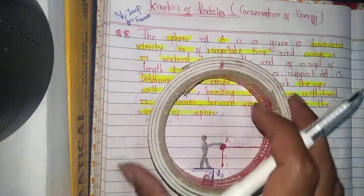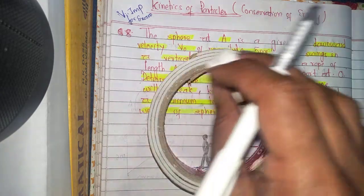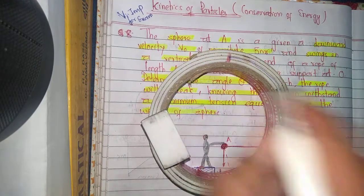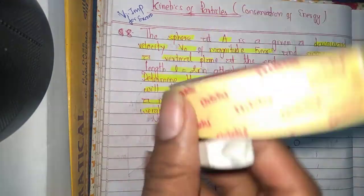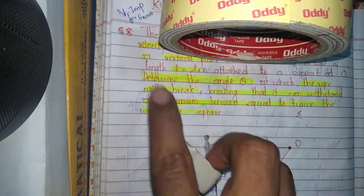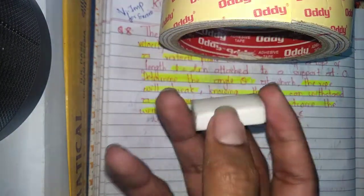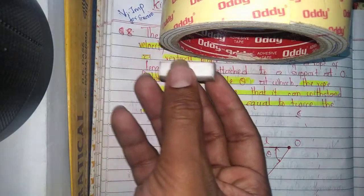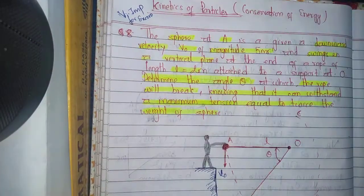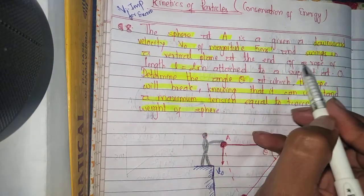The question has said it is swinging in a vertical plane, not a horizontal plane. If the question had said it is swinging in a horizontal plane, then it would swing like this — if this is our horizontal plane and this is the center, then the sphere swings in a horizontal circle like this.